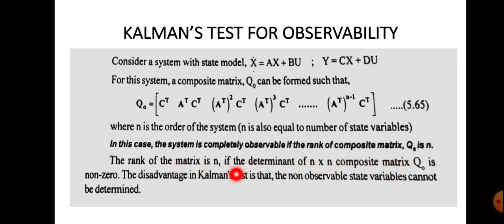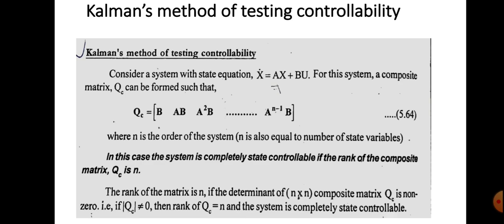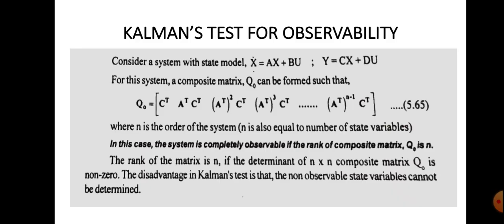The rank of the matrix is n if the determinant of the n×n composite matrix is non-zero. The condition is the same as in the controllability case, but the entries of Qo are different. In controllability, the entries are B, AB, A²B; here for observability the entries are Cᵀ, AᵀCᵀ, and so on.